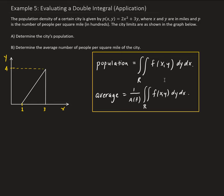So let's first figure out the city's population. I'm going to let capital P be the population. We're going to have a double integral — we want to integrate the population density, so we have 2x² + 3y. Since we're using dy dx, the dy corresponds to the inside of the integral.